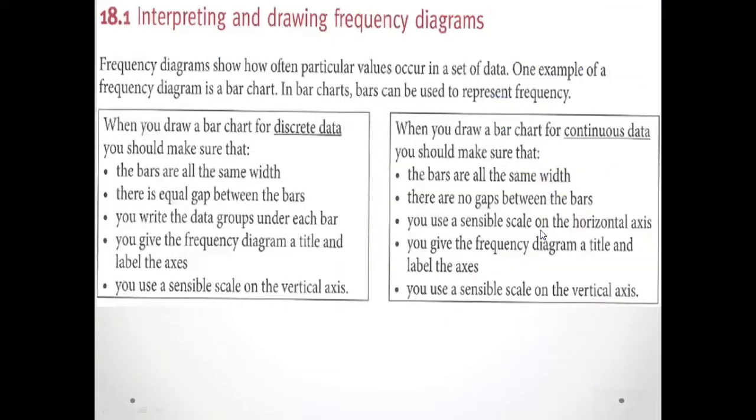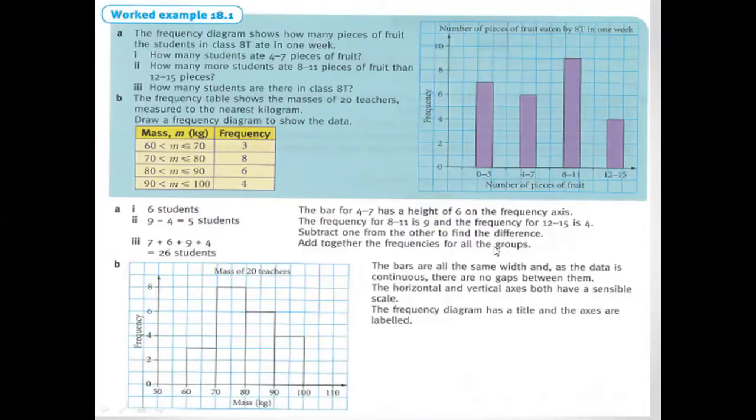Now in this chapter we will learn about interpreting and drawing frequency diagrams. There are two types of bar charts: one is discrete data and the other is continuous data. Let's find. Here we have our one graph that is called discrete graph.